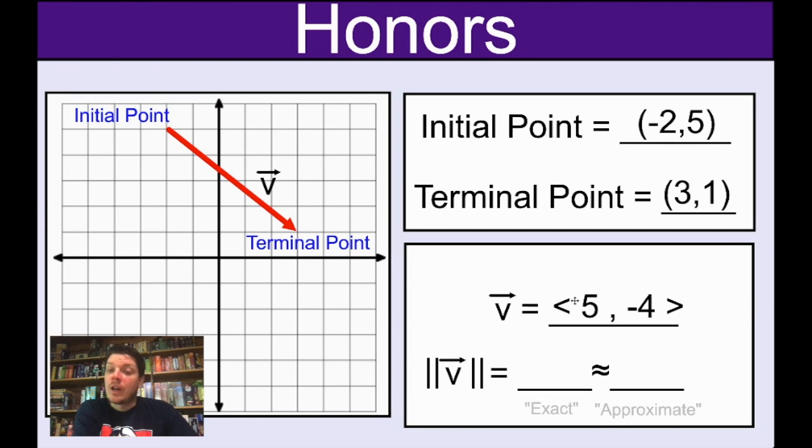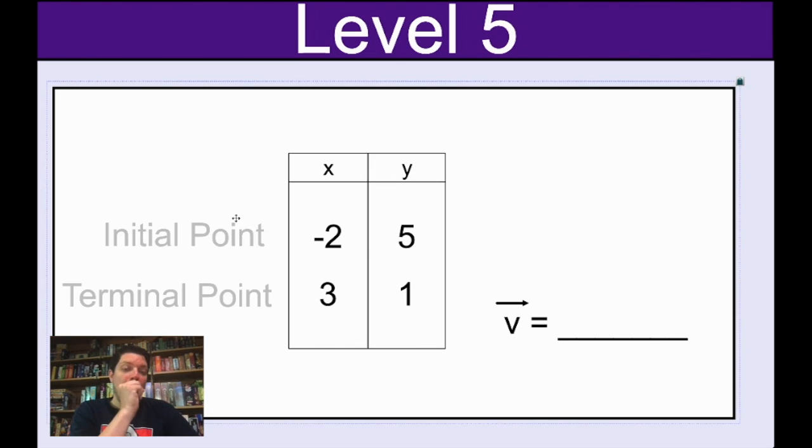And then, what I wanted to do before we talk about the magnitude is I wanted to review how to find the components if you don't have a picture. So for example, if we look at this page here, if we know the initial point and the terminal point, just like we've been doing in class over and over and over all year, is we could figure out how do you go from the initial point to the terminal point?